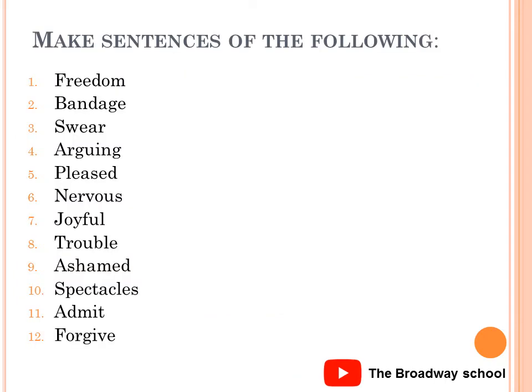Now come to the exercise. Note down these words in your notebook and make sentences of the following words. Number one: freedom — which means liberty. Number two: bandage — which means dressing used to protect an injured part of a body. Number three: swear — which means to make a promise. Number four: arguing — which means to persuade someone to do or not to do something.